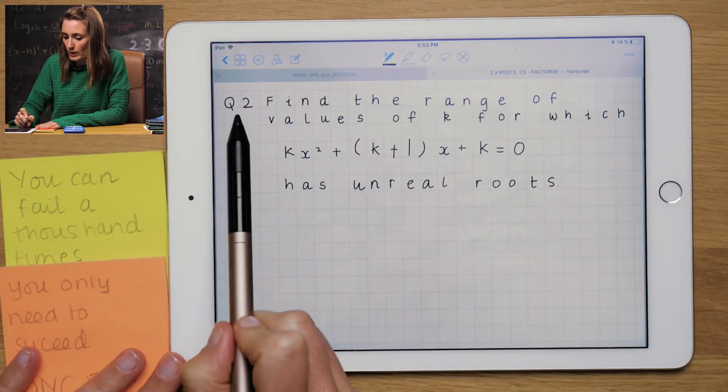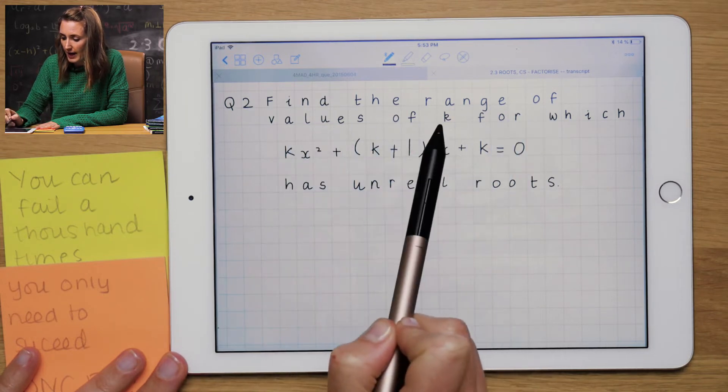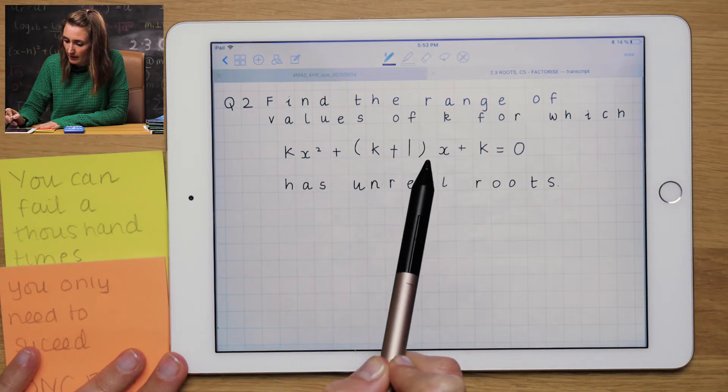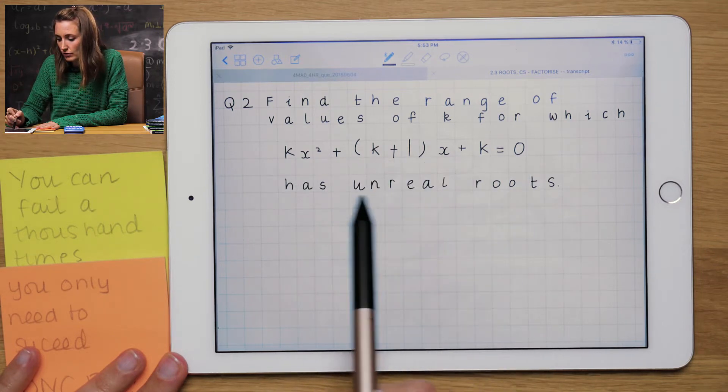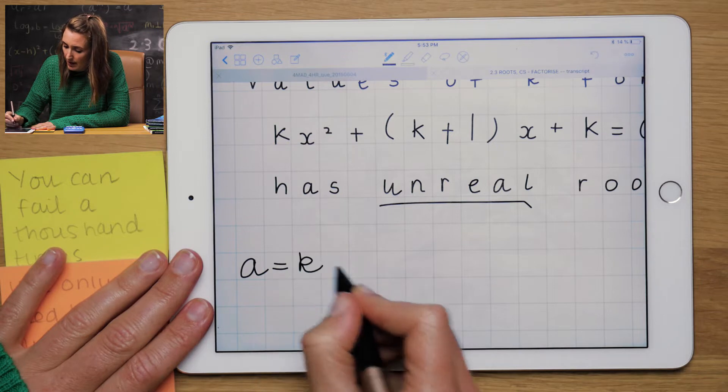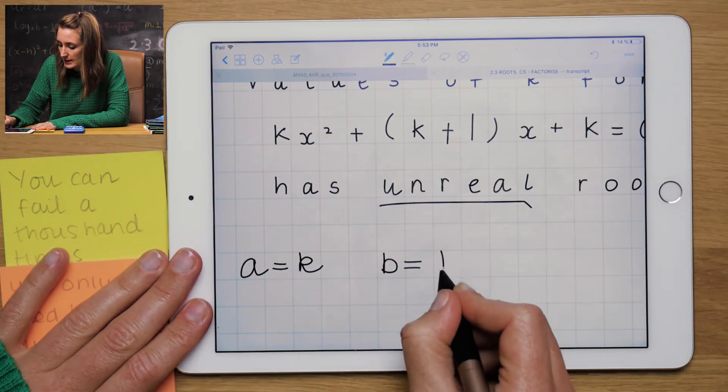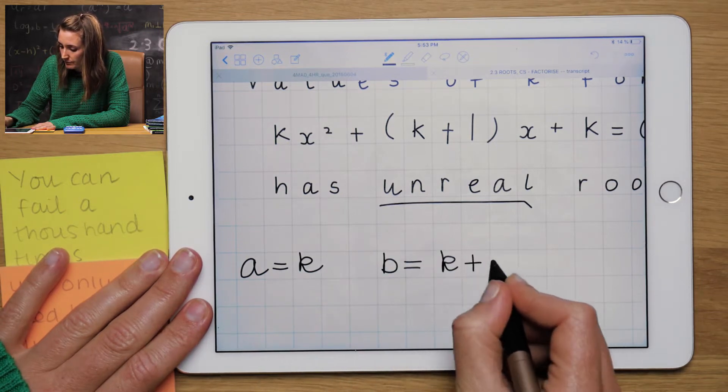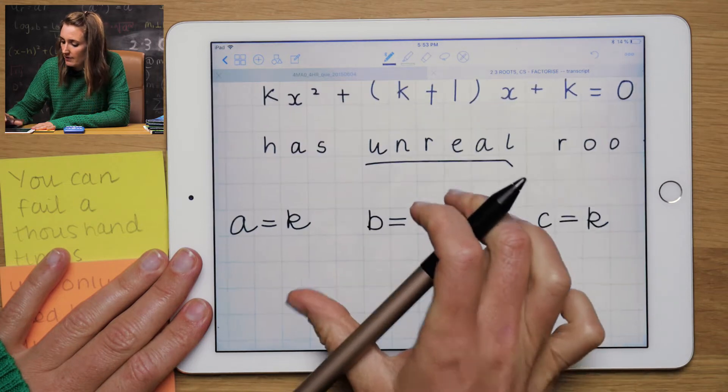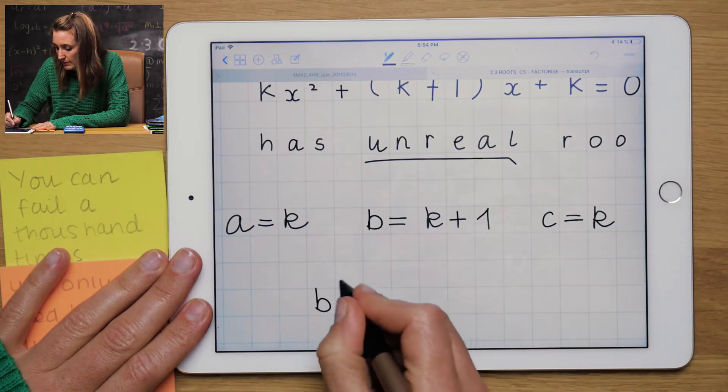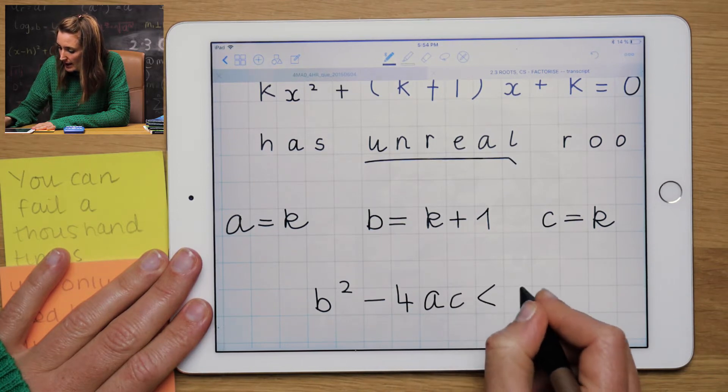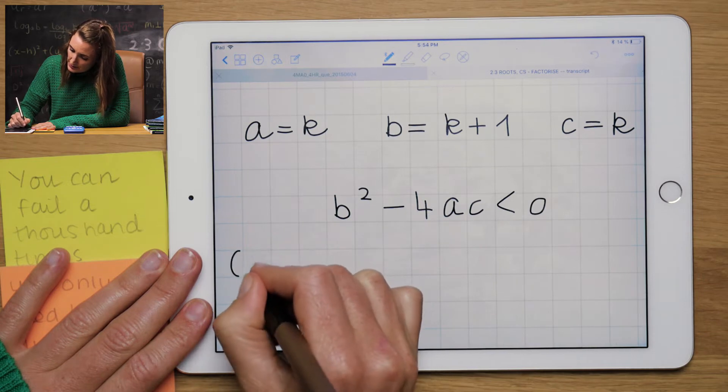Okay, question two. Find the range of values of k for which this equation kx squared plus k plus 1x plus k has unreal roots. Slightly different terminology but meaning exactly the same thing. So start by writing down my abc. Then for unreal roots I'm going to write b squared minus 4ac less than 0.